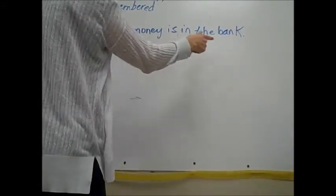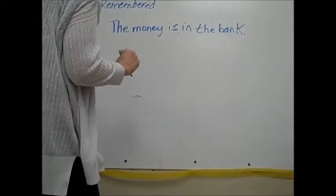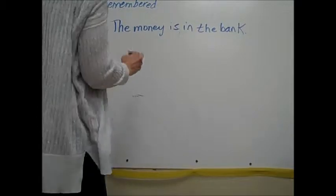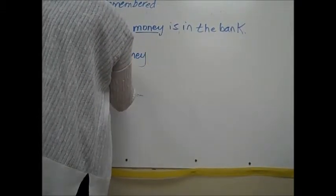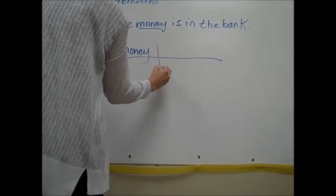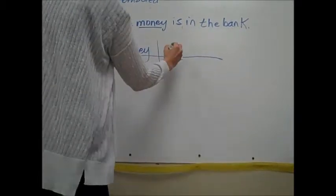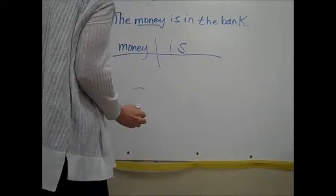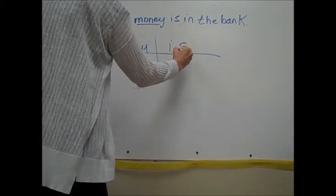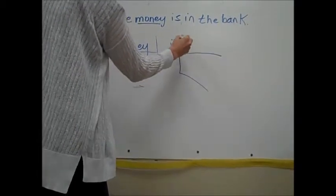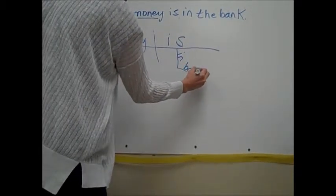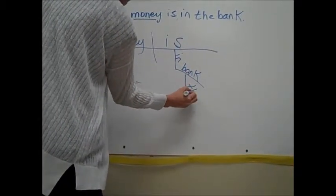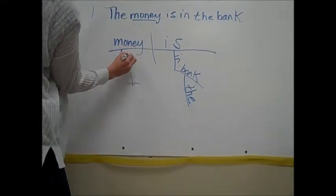Okay, the money is in the bank. Remember we're working on adverb prepositional phrases. Our subject is money, our verb or predicate is 'is'. Our adverb prepositional phrase that modifies our verb 'is' is going to be 'in the bank', and then this article is acting as an adjective modifying money.